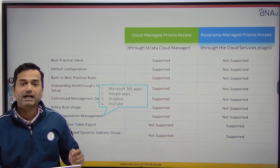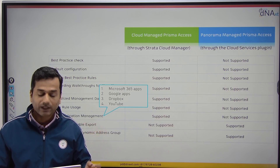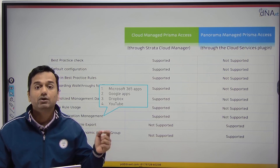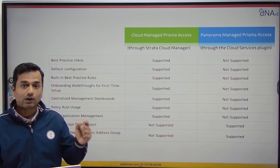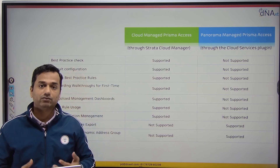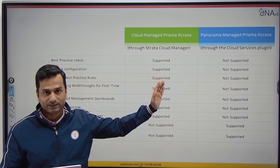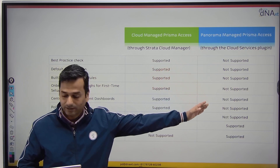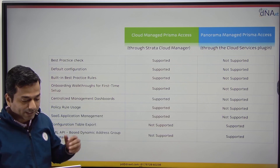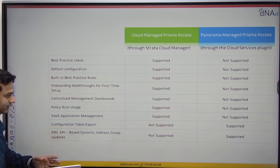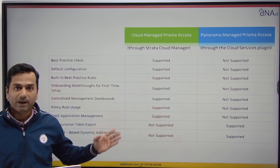SaaS application management: by default, through Strata Cloud Manager, you can manage Office 365, Microsoft 365, Google Apps, Dropbox, and YouTube. Regarding configuration table export — if you have a configuration and want to export it as a table, you cannot do that in Strata Cloud Manager, but it is supported by Panorama. Similarly, XML API-based dynamic address groups are supported only by Panorama, not by Strata Cloud Manager.